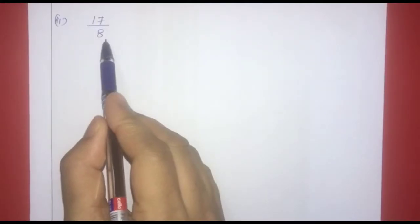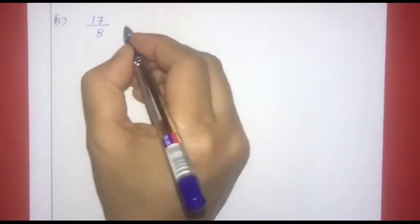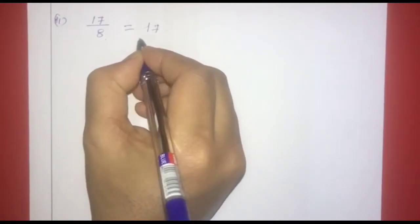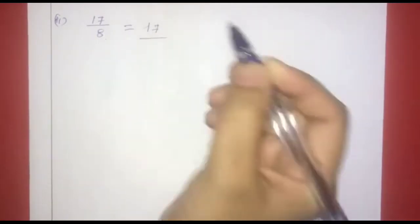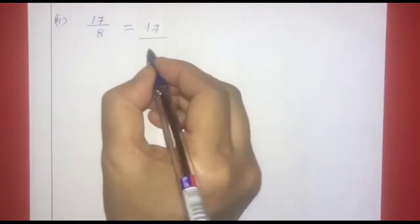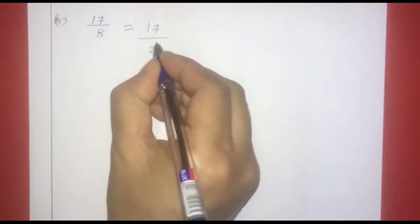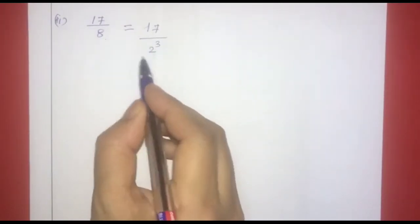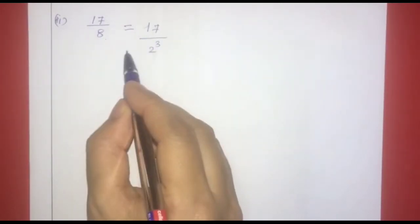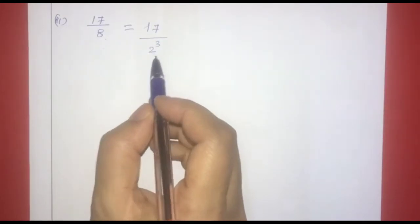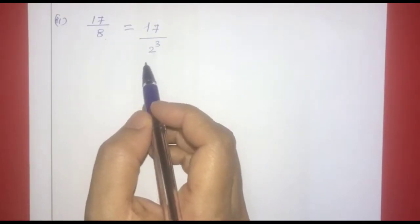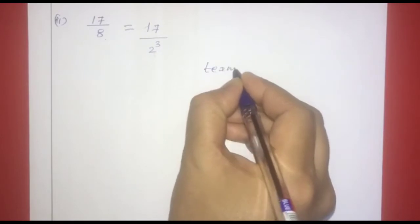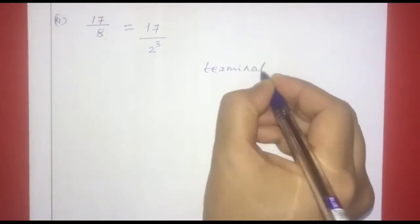The next one is 17 by 8. That is equal to 17 divided by 2 raised to 3. The denominator is of the form 2 raised to n into 5 raised to m — specifically 2 raised to 3 into 5 raised to 0. Therefore, the decimal expansion will be terminating.